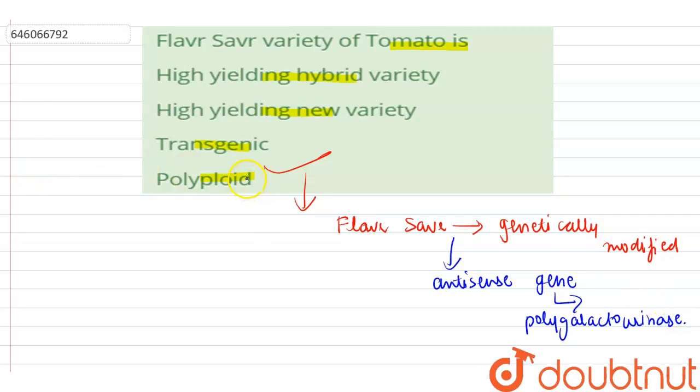By introducing this antisense gene, the shelf life of tomato was increased by decreasing the ripening rate of tomato.